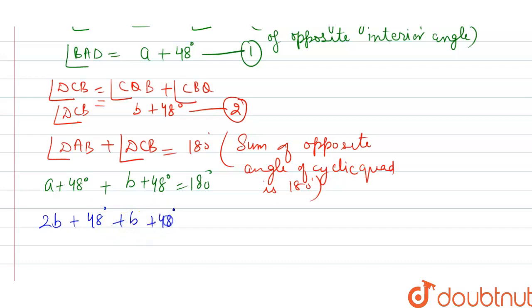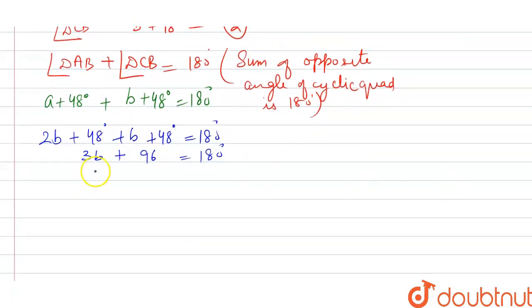2B plus B is 3B, and 48 plus 48 is 96, equals 180 degrees. Then 3B equals 180 minus 96. 180 minus 96 is 84.